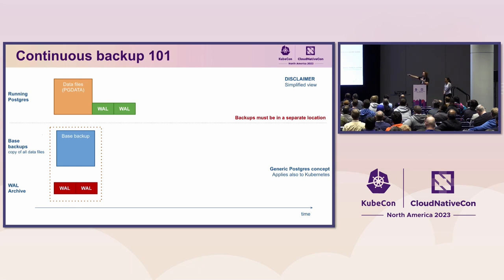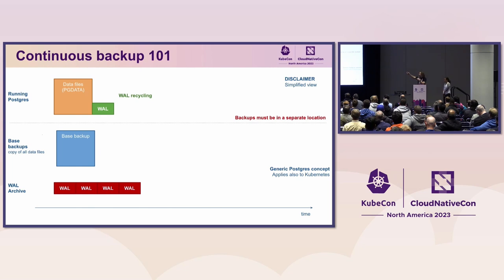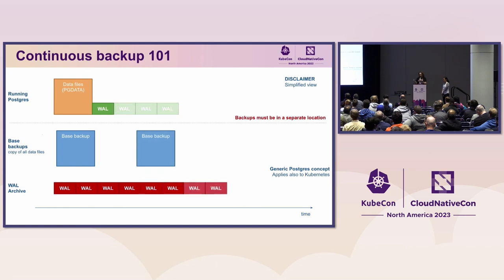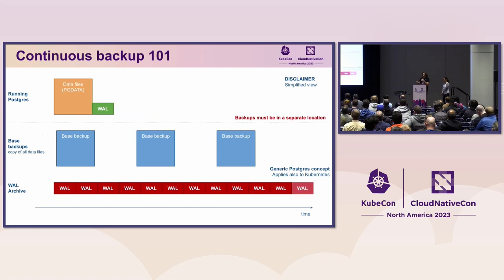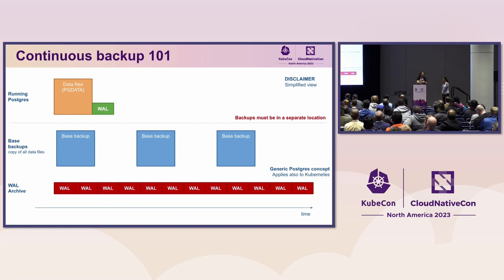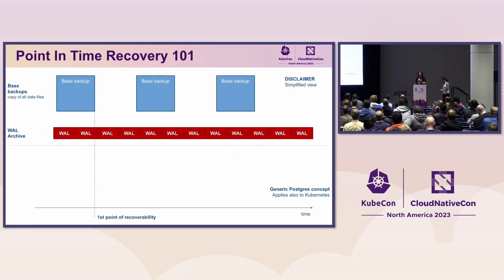Your database in production continuously churns out WAL files, recycles them, and archives them. Your task is as simple as scheduling backups, whether daily or weekly — and if you do this, you basically have continuous backup in Postgres. Postgres does not require a specific implementation for copying these files, which is very important because with our operator we're now using volume snapshots. Provided you have a catalog of base backups and a continuous sequence of WAL files in the archive, Postgres allows you to recover to any point in time.